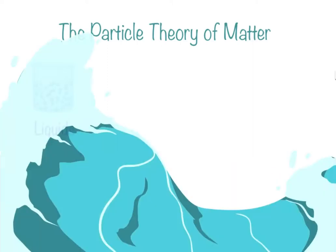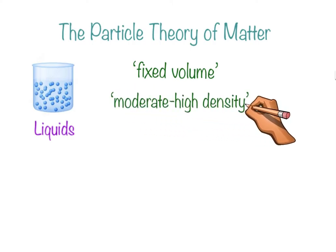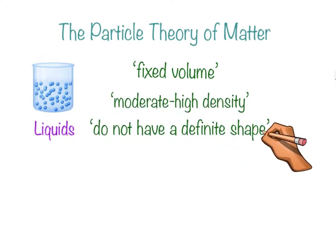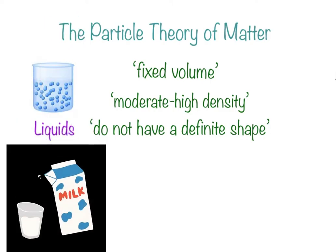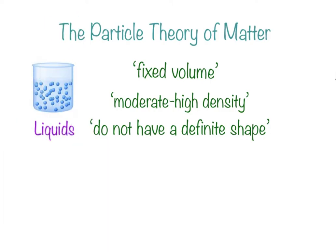Next comes liquids. They have a fixed volume too. They have moderate to high density and they do not have a definite shape, which means that they can take the shape of the container you put them in. And liquids can flow easily.